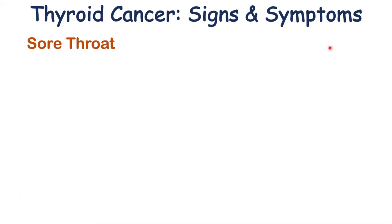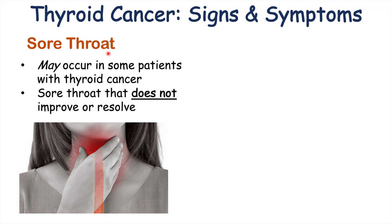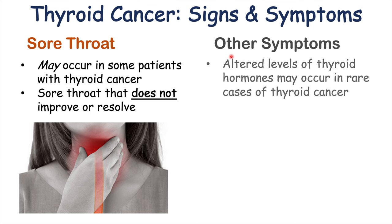Some patients can also experience a sore throat that does not improve or resolve — they will have a sore throat for a very long time, and other potential causes are often ruled out. There can also be other symptoms due to altered levels of thyroid hormones, which may occur in rare cases of thyroid cancer. We may not see very significant changes in thyroid hormone levels, but in some cases we can.